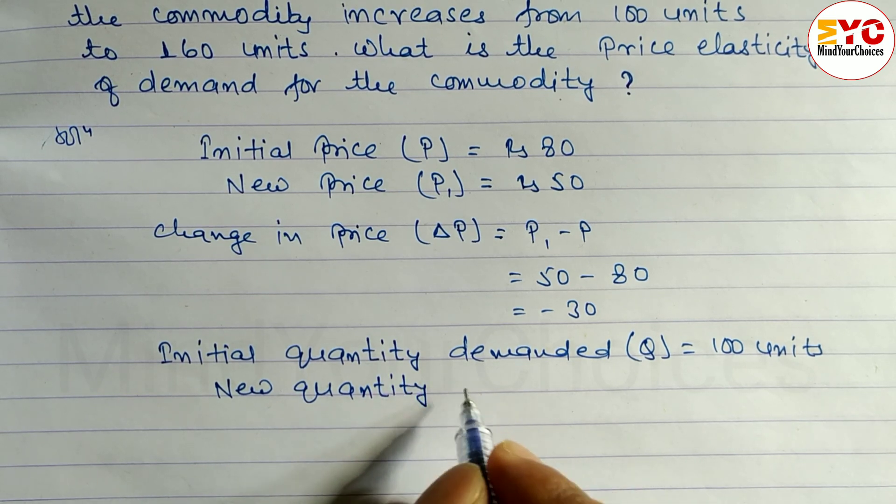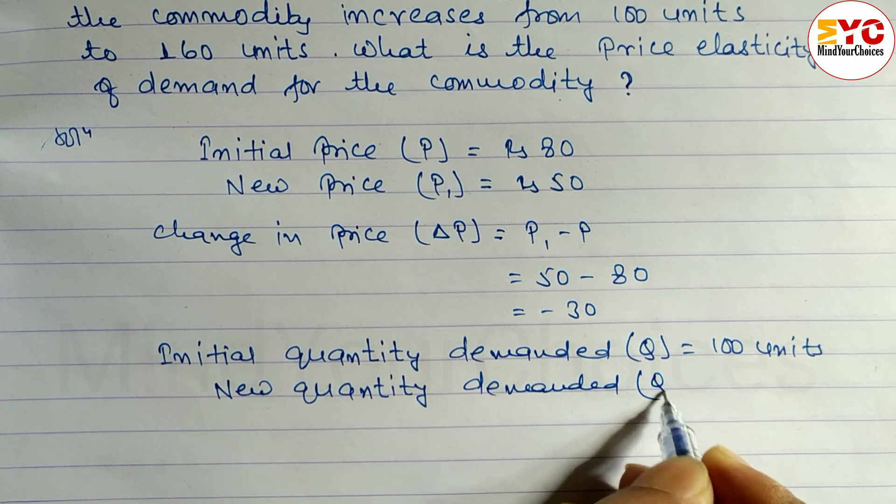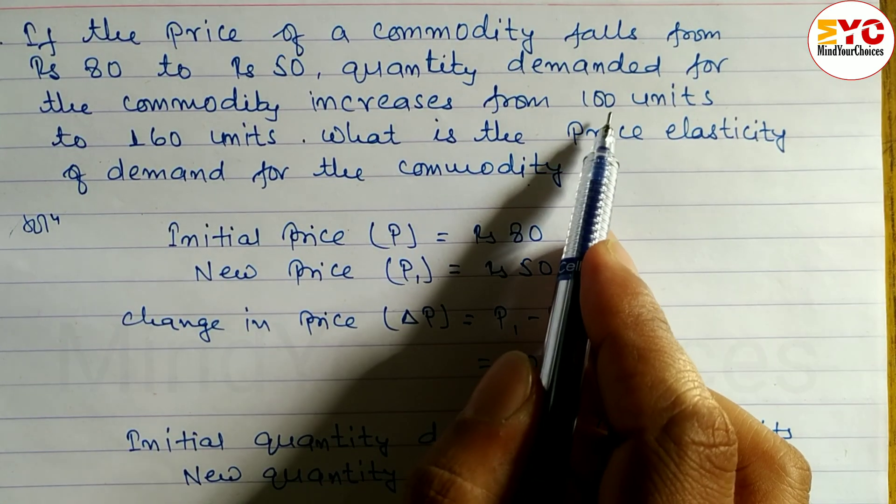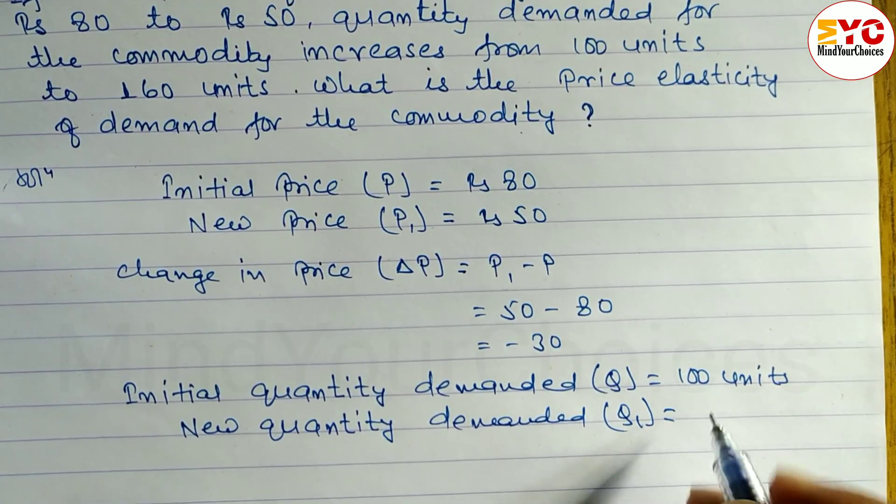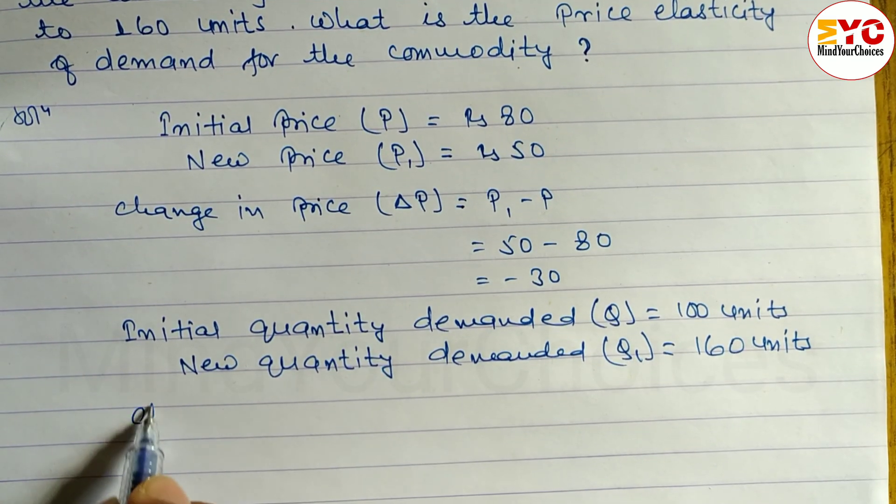New quantity demanded, which is denoted by Q1, is equal to 160 units. Now we have change in quantity demanded.